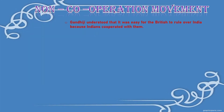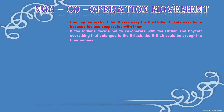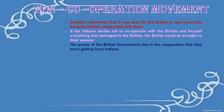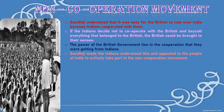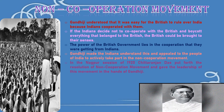Gandhiji understood that it was easy for the British to rule over India because Indians cooperated with them. If the Indians decided not to cooperate with the British and boycott everything that belonged to the British, the British could be brought to their senses. The power of the British government lay in the cooperation they were getting from Indians. Gandhiji appealed to the people of India to actively participate in the non-cooperation movement. In the Nagpur session of 1920, Chitranjan Das put forth the resolution of non-cooperation movement and gave its leadership to Gandhiji.